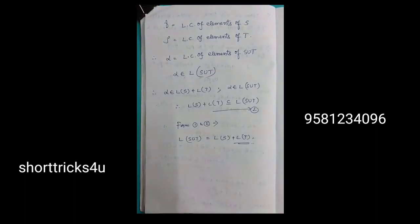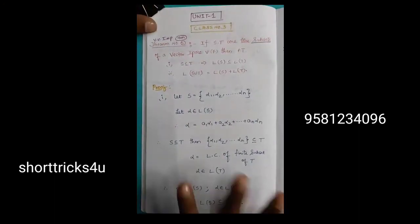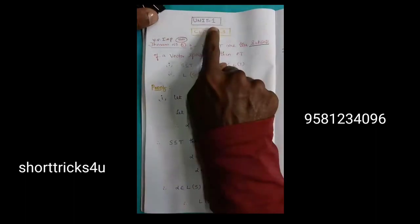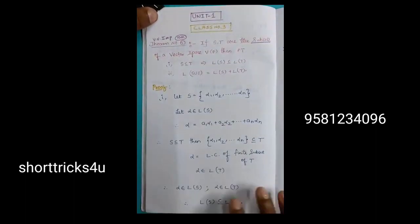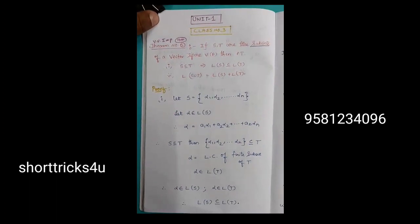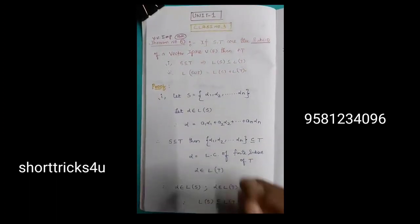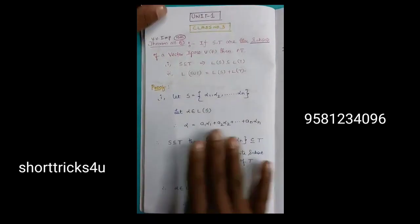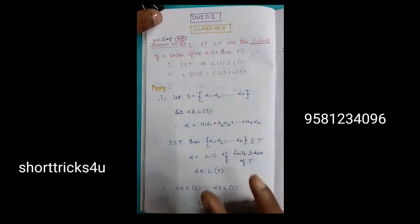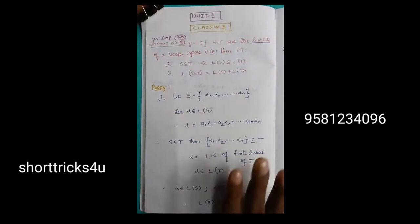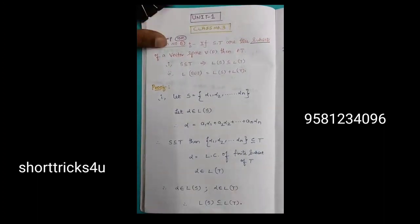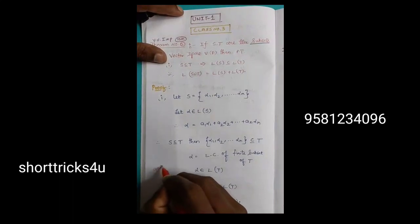L of S union T equals L of S plus L of T — very, very easy. When you are strong with practice it becomes much easier. All long answers are completed from unit number 1. For short answers, there are six questions — formulas are very important, my dear students.